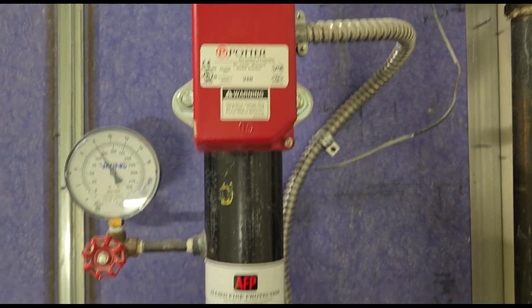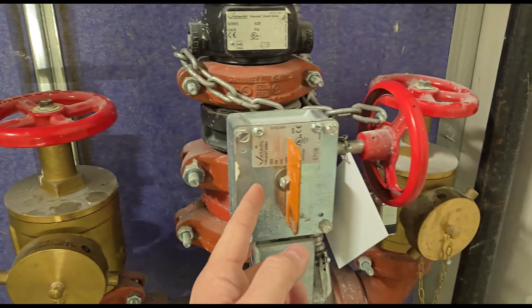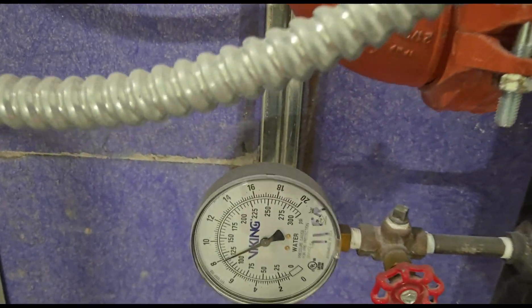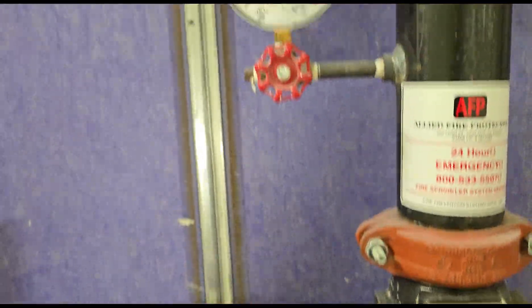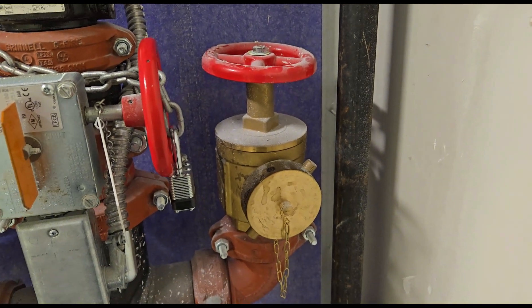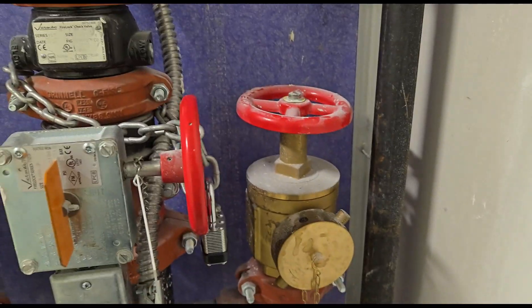So we have our Potter switch. We have our control valve. Our flag is open, so water is going to be flowing through the system. We have a gauge at the bottom, as well as the gauge up here. You can see our pressure. We have our standpipe valve for our hose connection.